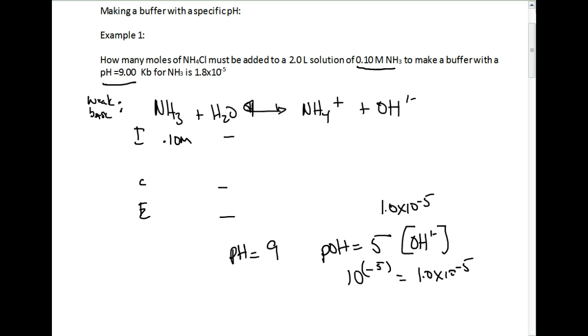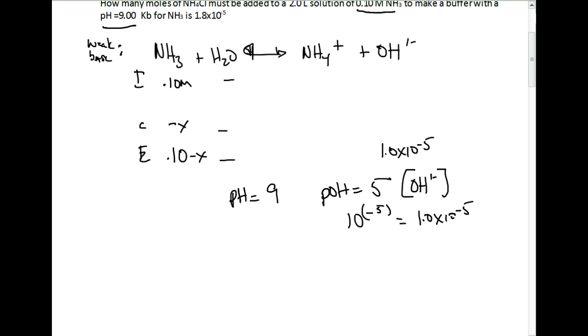Other things we can fill in on our ICE table: we know this reaction goes to the right, so we have minus x. So we have 0.1 minus x. We're going to assume x is small.